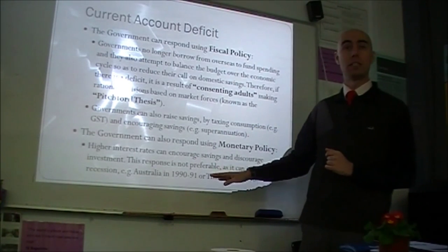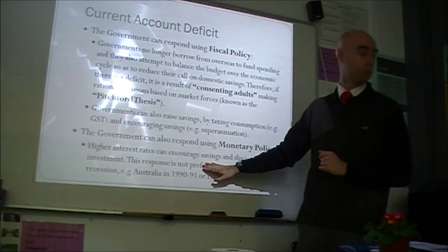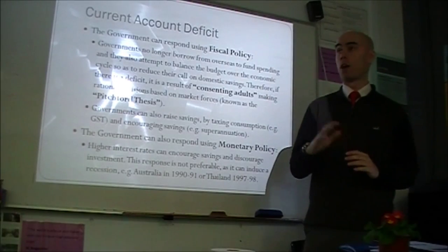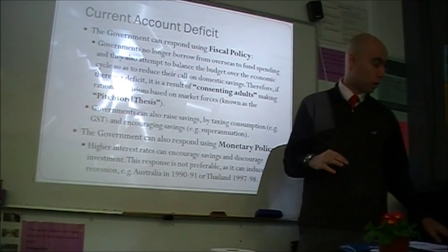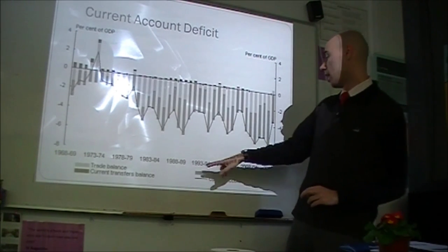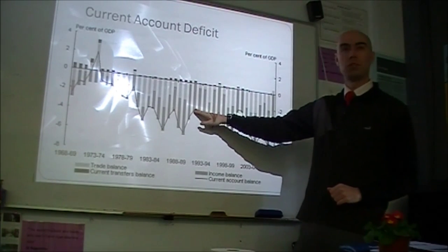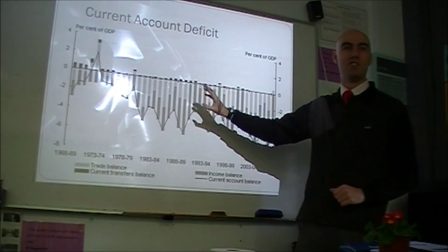The RBA can also put in place higher interest rates, which encourage savings and discourage investment — also reducing the current account deficit. However, this response is not preferable because it can induce a recession. We saw that in Australia in 1991 — the 'recession we had to have' — when interest rates got up to 17%. The current account deficit did come down from about 6% of GDP in 1988 to 4% in a short period of time, but a recession was the result. Not ideal.